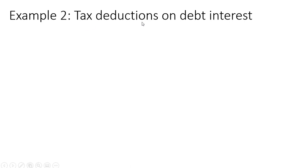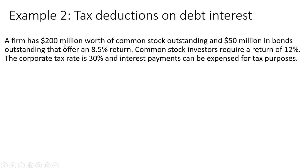Example 2: let's deal with tax deductions on debt interest. A firm has $200 million worth of common stock outstanding, $50 million in bonds outstanding that offer an 8.5% return, and common stock investors require a return of 12%. The corporate tax rate is 30% and interest payments can be expensed for tax purposes. This will just change our formula slightly.